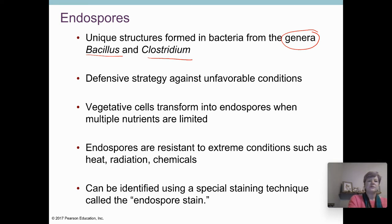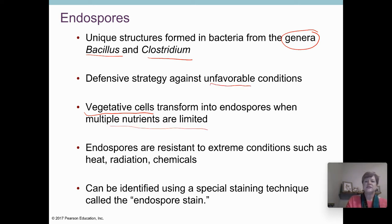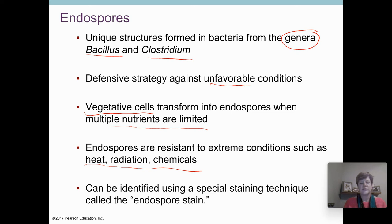Regular cells — what we call vegetative cells, meaning cells that are living normally — can transform themselves into endospores when conditions are unfavorable: when nutrients are limited, or when there's heat, radiation, or chemicals. Endospores can survive those conditions. They are very tough structures. A cell will form an endospore, essentially hunkering down to protect itself, and when conditions get better it can go back to being a vegetative cell.